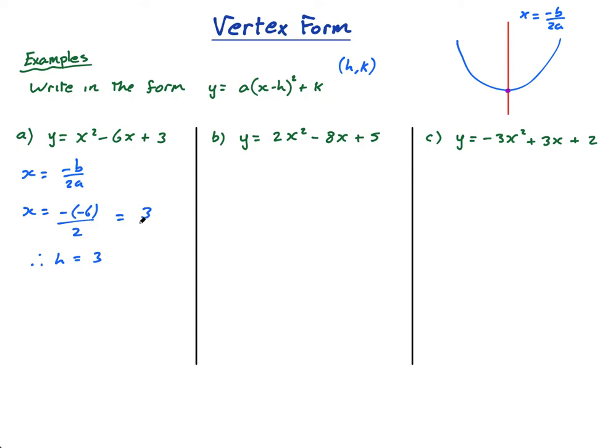Now, to find k, I'm going to say when x equals 3, what is y? So y equals 3 squared minus 6 times 3 plus 3, which is 9. 9 minus 18 is negative 9, plus 3 is negative 6, therefore k equals negative 6.